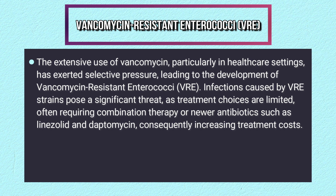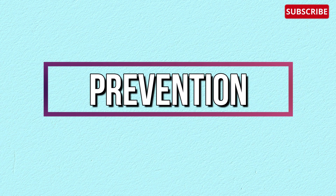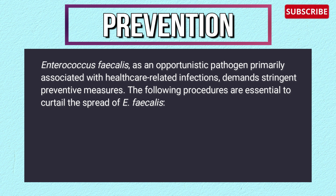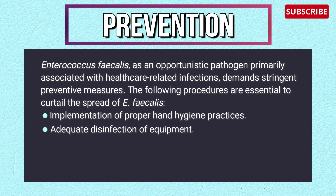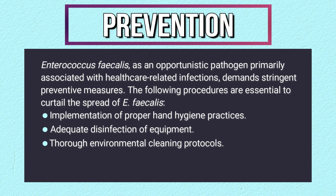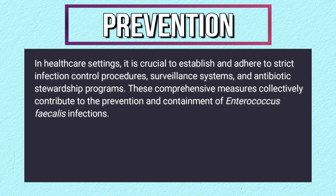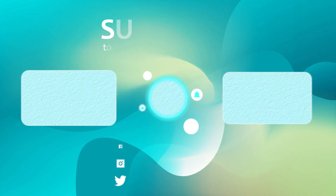Prevention of Enterococcus faecalis infections: as an opportunistic pathogen primarily associated with healthcare-related infections, stringent prevention is essential. Key measures include implementation of proper hand hygiene practices, adequate disinfection of equipment, thorough environmental cleaning protocols, and isolation of infected or colonized individuals in healthcare settings. It is also crucial to establish and adhere to strict infection control procedures, surveillance systems, and antibiotic stewardship programs to collectively prevent and contain Enterococcus faecalis infections.